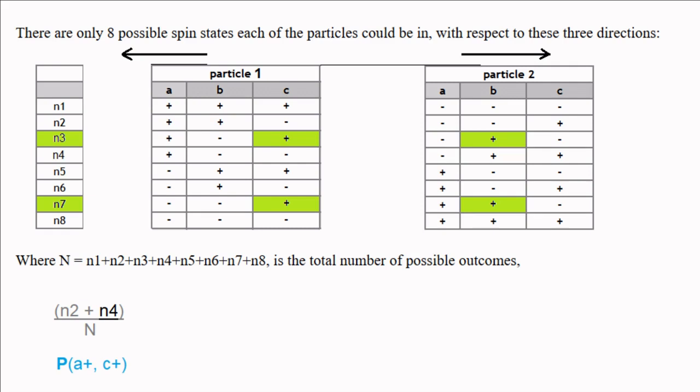Likewise the number of times that spin 1 is plus along direction c, and spin 2 is plus along direction b, equals n3 plus n7. Therefore the probability of s1 being plus along c and minus along b is equal to n3 plus n7 over n.